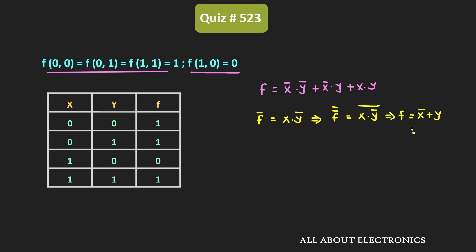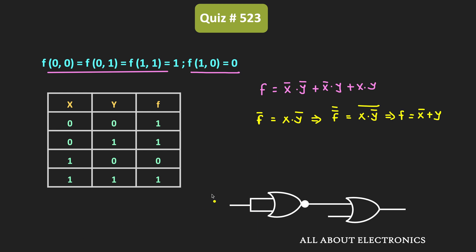We need to implement this function using only the OR gate and the NOR gate. We will apply the x input to the NOR gate, so the output of this first NOR gate will be equal to x̄. This output of the NOR gate will be one input to the OR gate, and the second input to the OR gate will be y. So the output of the OR gate is equal to x̄ + y.